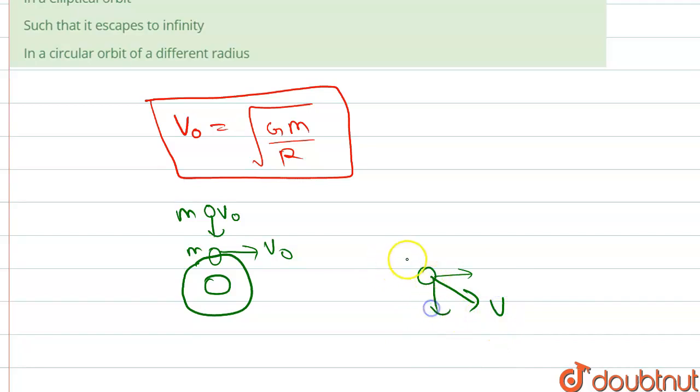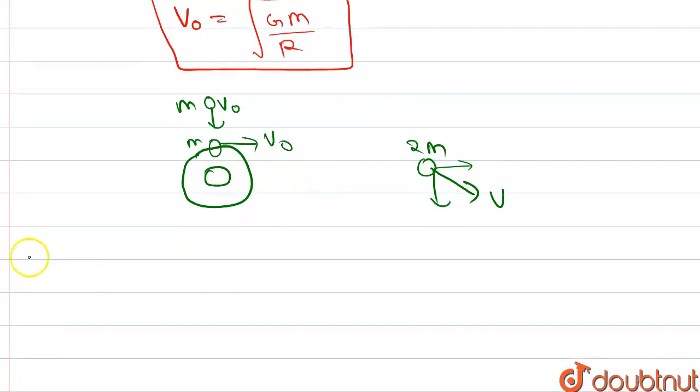And their mass will be 2m, so we apply momentum conservation. Then m v₀ î + m v₀(-ĵ) = 2m v⃗. So m cancels here, then v₀ î - v₀ ĵ = 2v⃗.